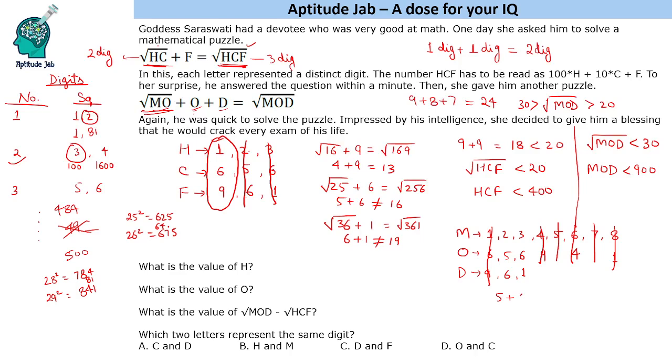256, if we talk about, we have 5 plus O, O is 5, plus 6 and under root 256 is 16. MO is 25 and this is 16 which fits. So this becomes our answer.